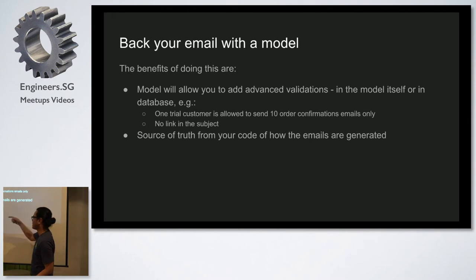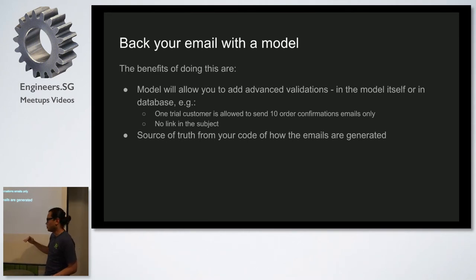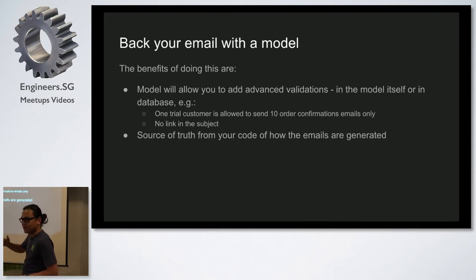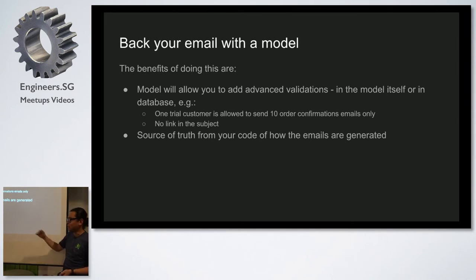What I like about having a model for every email is that it becomes the source of truth from your code for how emails are generated. You'll often have cases where you think you sent 1,000 emails but SendGrid or Mailgun says you sent 10,000 — where's the discrepancy coming from? Having that model makes it easier to audit and see where the leak is.